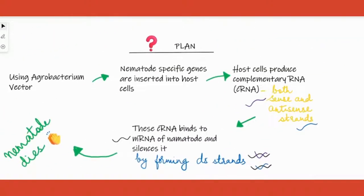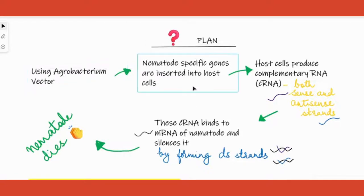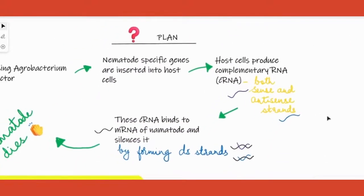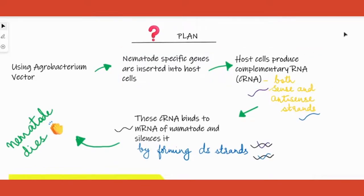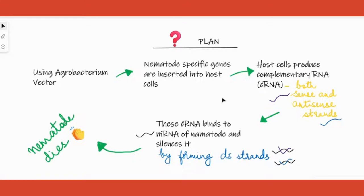So what is RNA interference and what are the steps involved? Using an Agrobacterium vector, we are introducing nematode-specific genes into the tobacco cells. Nematode-specific genes are certain genes that are essential for this parasite to live. These genes are taken out and inserted into the tobacco itself, and as a result the tobacco cells start producing complementary RNA, or cRNA, inside the tobacco plant.